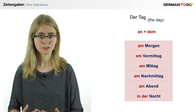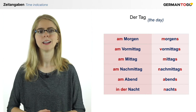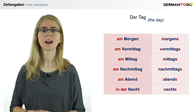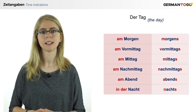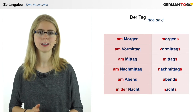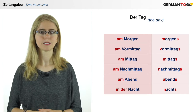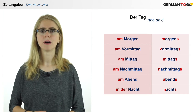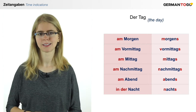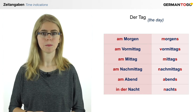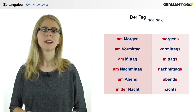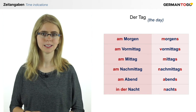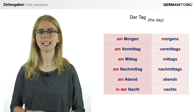If you want to say every morning, you can say morgens. Vormittags, Mittags, Nachmittags, Abends, and Nachts. Again all with a small letter and an S at the end. Can you repeat after me? Am Morgen, am Vormittag, am Mittag, am Nachmittag, am Abend, in der Nacht.